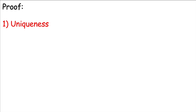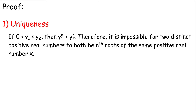Let's get into the proof, starting with uniqueness. If we start with two distinct positive numbers, say y1 is less than y2, then we can say pretty quickly that y1 to the nth power must be less than y2 to the nth power. This follows from the ordered field properties of R and can be proved by induction. Therefore, it is impossible for two distinct positive real numbers to both be nth roots of the same positive real number x. Uniqueness is proved.